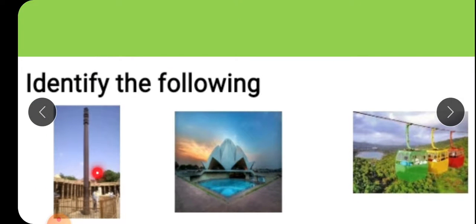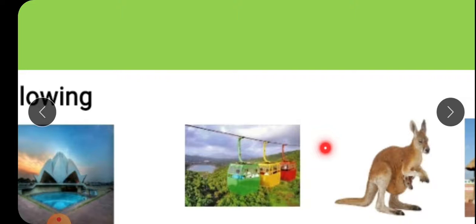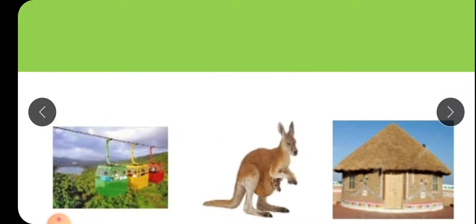First one, what is the picture? Say the answer, it's iron pillar. This picture? Opera house. What is this picture of? Rope way. Identify this. It's kangaroo. And what is this children? Bhungo. What is it? Bhungo.